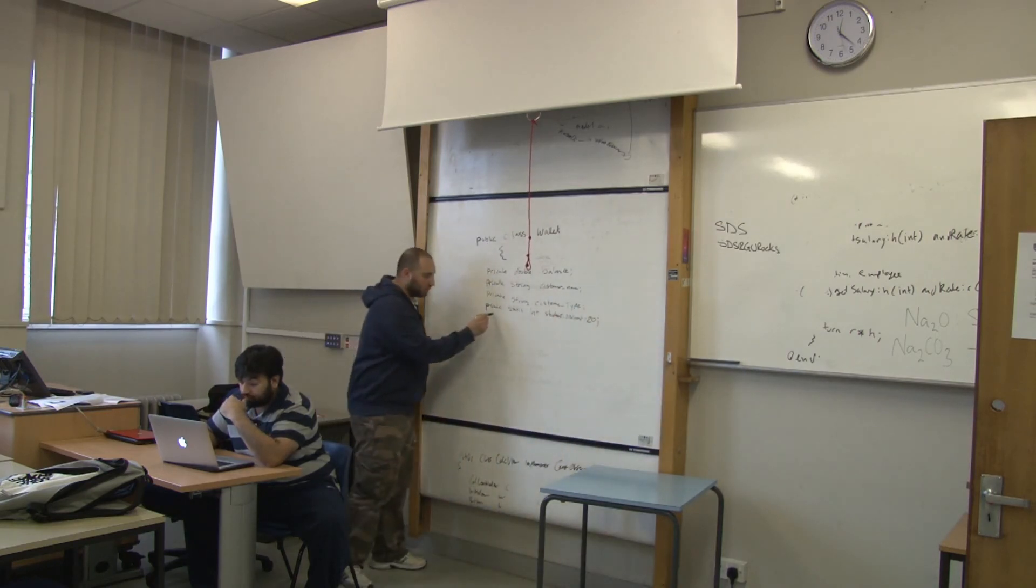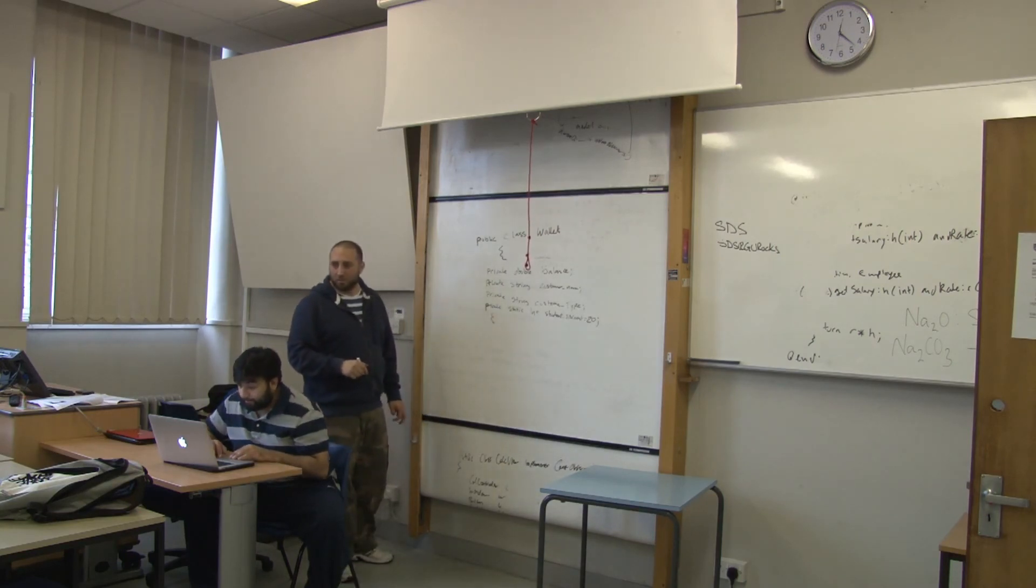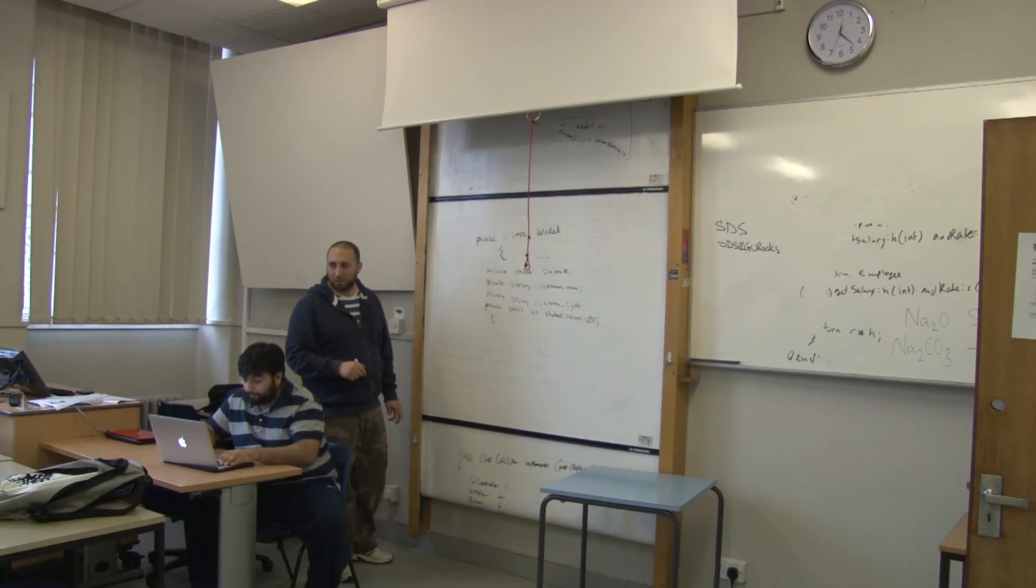We're finished with the properties. Now you want to do the methods, right? I'm going to open another one. What's the first method? The first method is private, no sorry, public wallet. Yeah, we're going to...